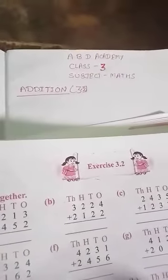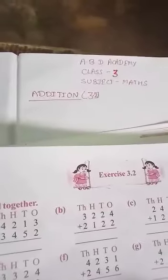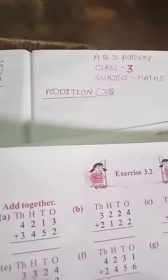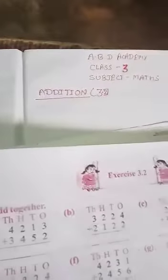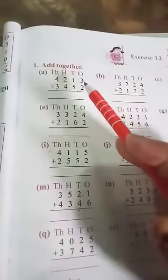Today I will teach Class 3, subject math, Exercise 3.2 addition. Exercise 3.2 covers addition all together - ones, tens, hundreds, thousands - without carry. We will use this carry in a long process later.